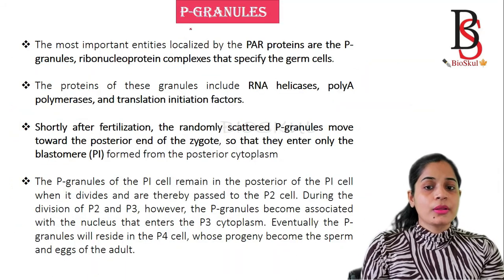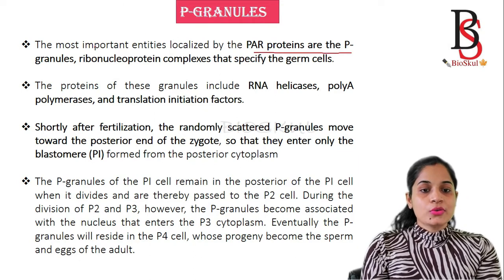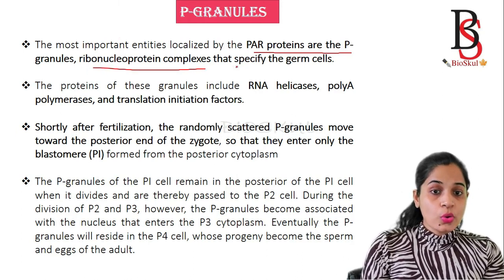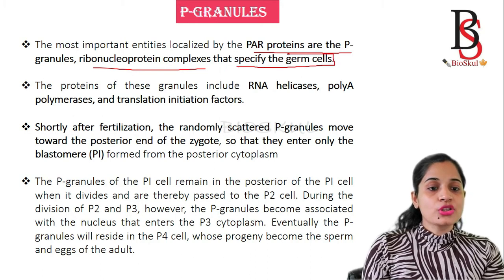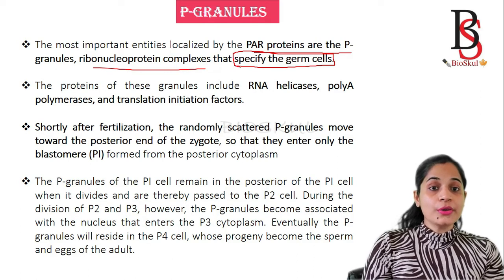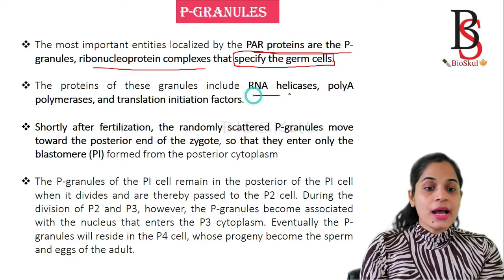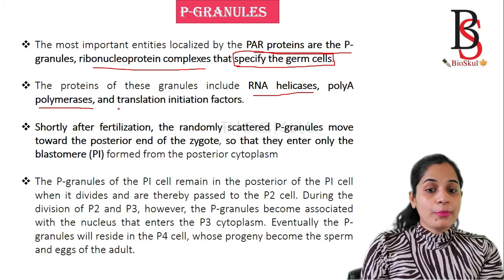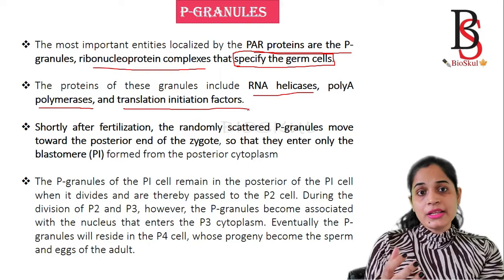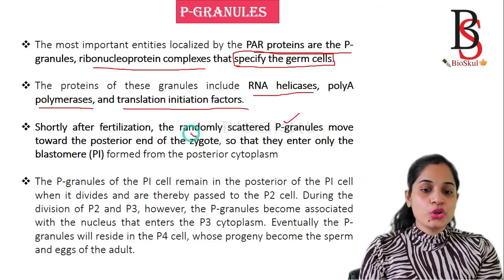So here you can see how the PAR proteins play a role in establishing the anterior and posterior axis. The anterior axis has PAR-3 and PAR-6, whereas the posterior end has PAR-1 and PAR-2. Now we'll see the P granules. P granules are an important component — they are ribonucleoprotein complexes. Their role is to specify the germ cells. The proteins of these granules include RNA helicases, polymerases, and translation initiation factors.